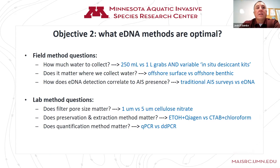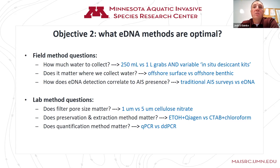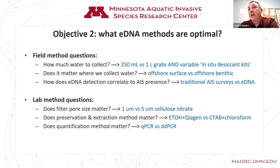We have lab method questions as well. Does filter pore size matter? We have test groups comparing results between one micron and five micron cellulose nitrate filters. Does preservation and extraction method matter? Our standard for about 95% of samples is to preserve the filter in ethanol and then do an extraction with a Qiagen DNA-EZ kit. There's another method where you put the filter into a CTAB buffer solution and do an extraction using a chloroform method. The CTAB buffer over time lyses cells and releases more DNA into solution.